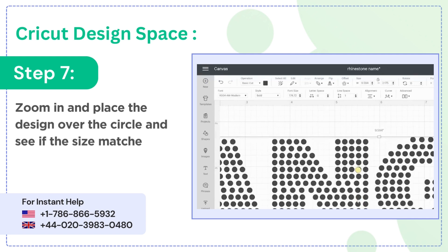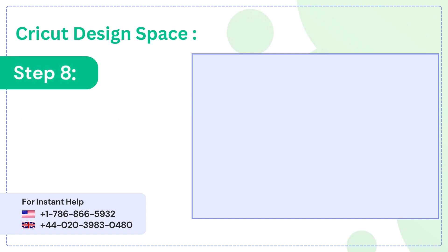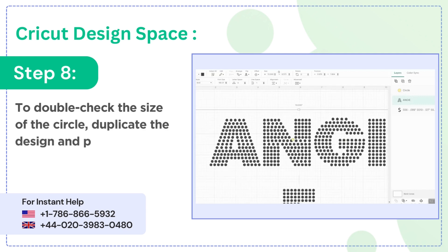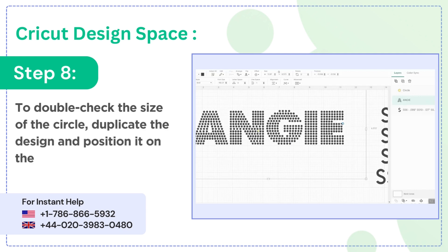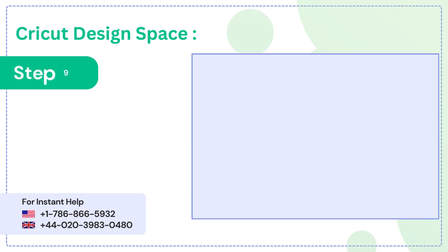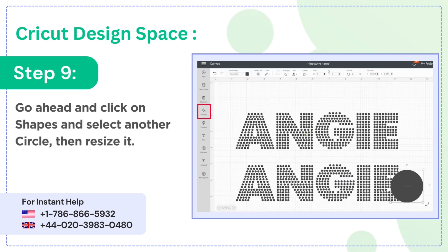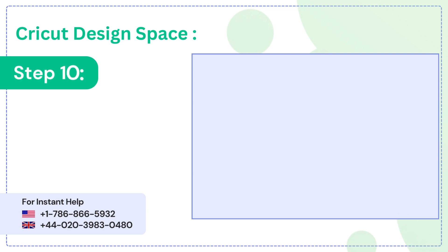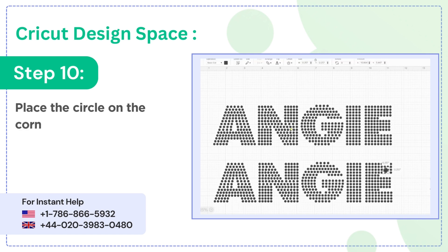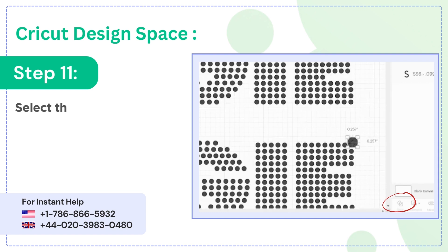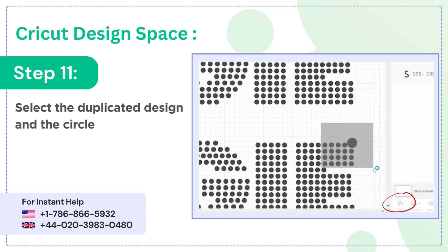Step 7: zoom in and place the design over the circle and see if the size matches. Step 8: to double-check the size of the circle, duplicate the design and position it on the mat. Step 9: go ahead and click on shapes and select another circle, then resize it.